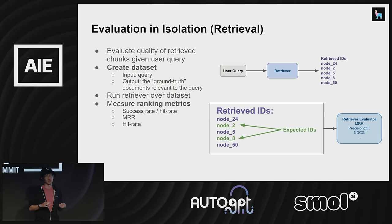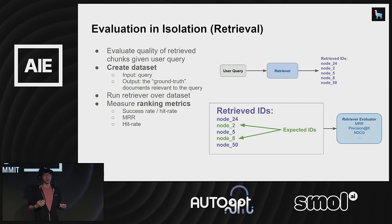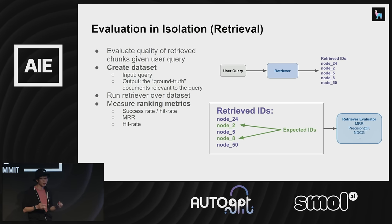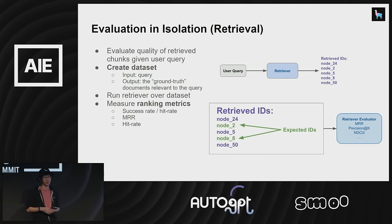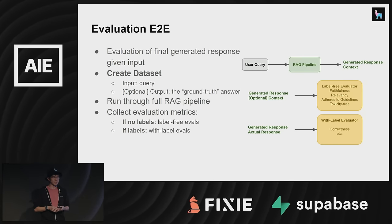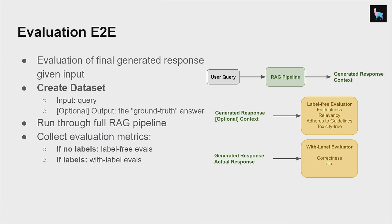Once you're able to evaluate retrieval, this is really an information retrieval problem — it's been around for at least a decade or two. For synthesis evaluation: after retrieval, you generate a response, so how do you evaluate the whole thing end to end? You can generate a dataset through human annotations, user feedback, or ground truth reference answers given the query. You can also synthetically generate it with GPT-4. You run this through the full RAG pipeline — retrieval and synthesis — and run LLM-based evals, both label-free and with-label evaluations.